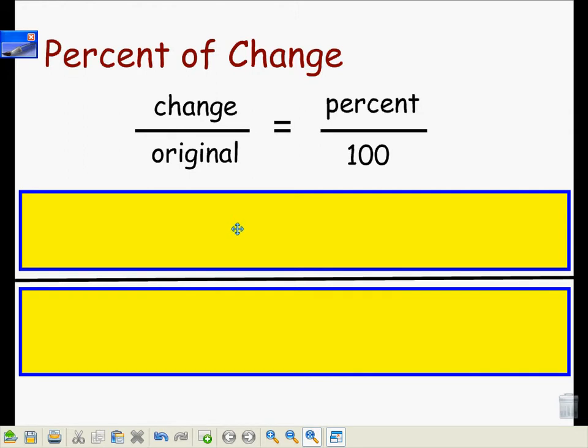Hello, today we'll be looking at how to calculate percent of change. Percent of change can be calculated using the formula: the amount of change divided by the original amount is equal to the percent of change over 100.